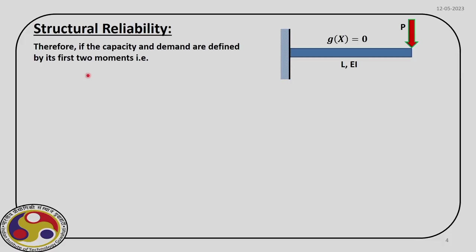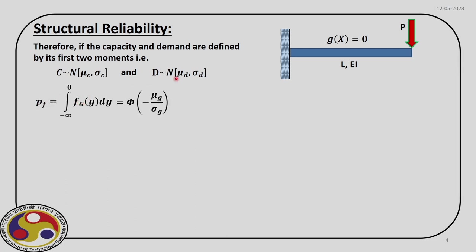We will use the first two moments already studied in probability theory. We define a limit state g(x) as the difference between capacity and demand, where g(x) = 0 is the limit state. For now, we consider both capacity and demand to be normal with their respective mean and standard deviation. Our aim is to find the PDF for this limit state g. The probability of failure — when g(x) < 0 — is found by integrating this PDF from minus infinity to 0, which equals Φ(−μg/σg).